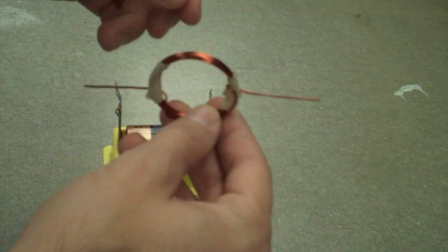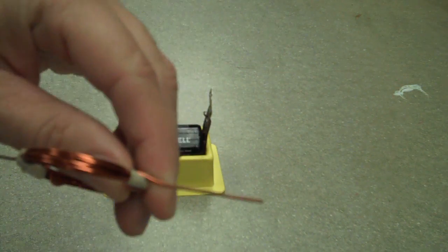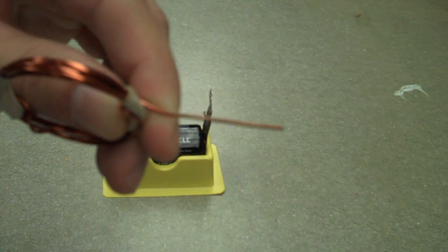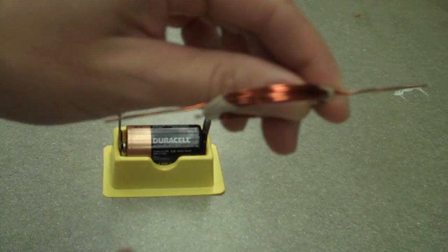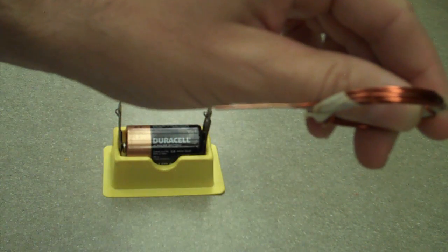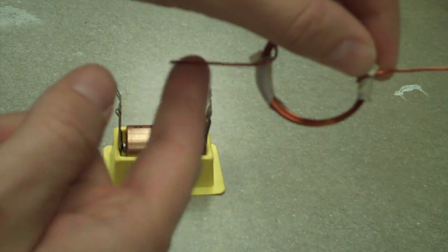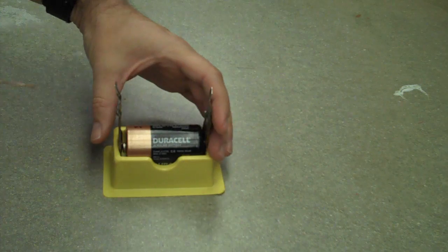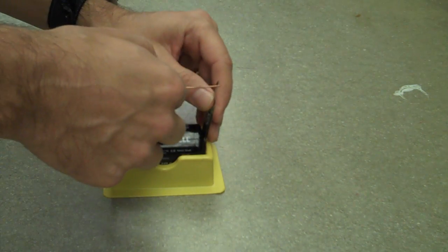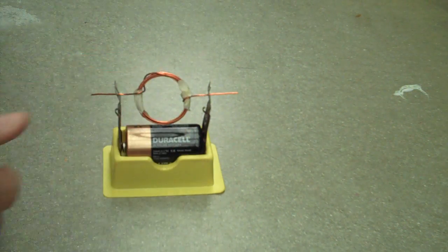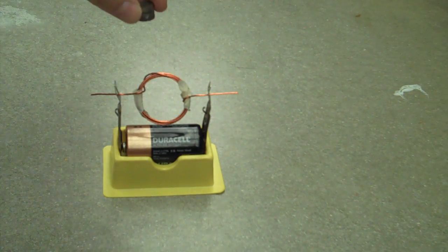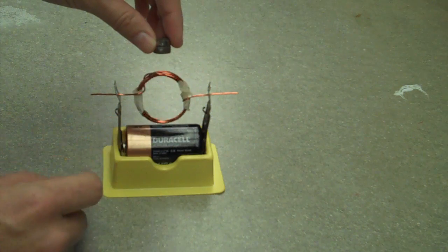In this case, I have shaved off the enamel on this half of the wire but not that half and also on this side. So this side has no enamel, this side does. I'm going to put it in my little battery holder. And this can be kind of tricky to do to get it to work. And I have here just a rare earth magnet. Sometimes you might need to give it a little push.